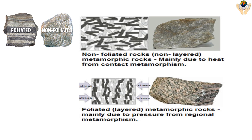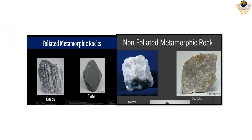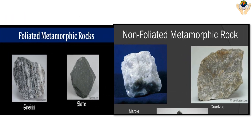Non-foliated rocks are formed mainly due to heat from contact metamorphism. Examples of foliated metamorphic rocks include gneiss and slate. Examples of non-foliated metamorphic rocks include marble and quartzite.